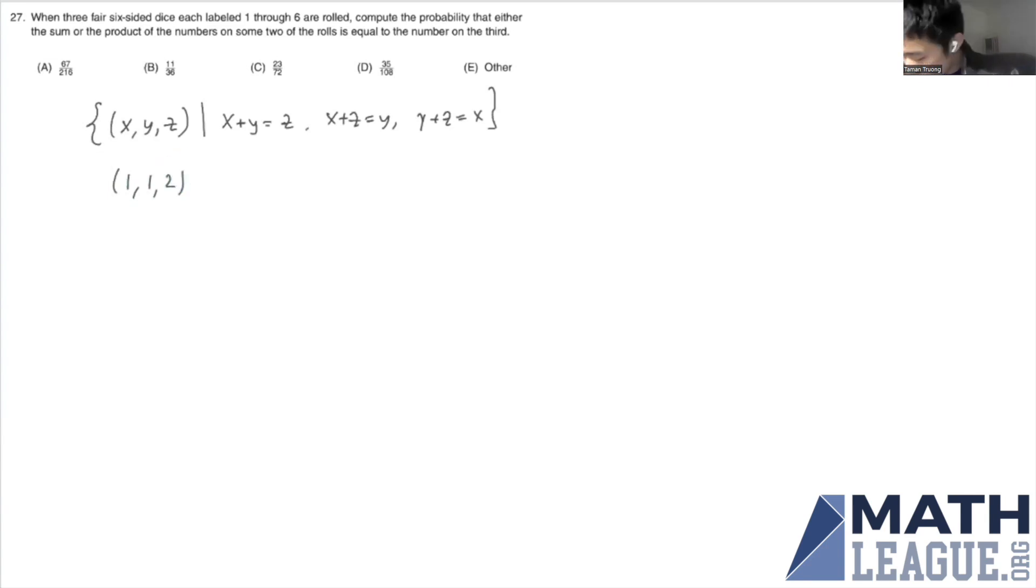So because 1 plus 1 is 2, we have 1 plus 2 is 3, 1 plus 3 is 4, 1 plus 4 is 5, 1 plus 5 is 6. And we can't go any further because 1 plus 6 is 7, but 7 is not on a six-sided die.